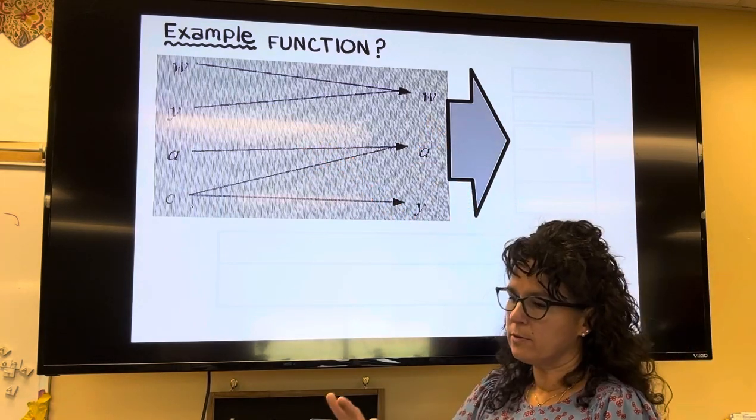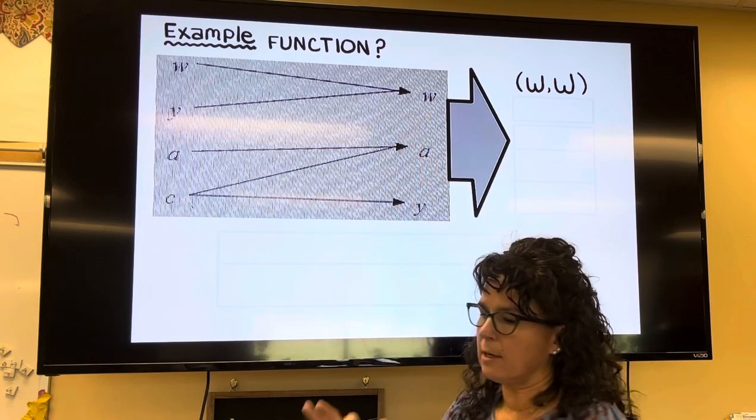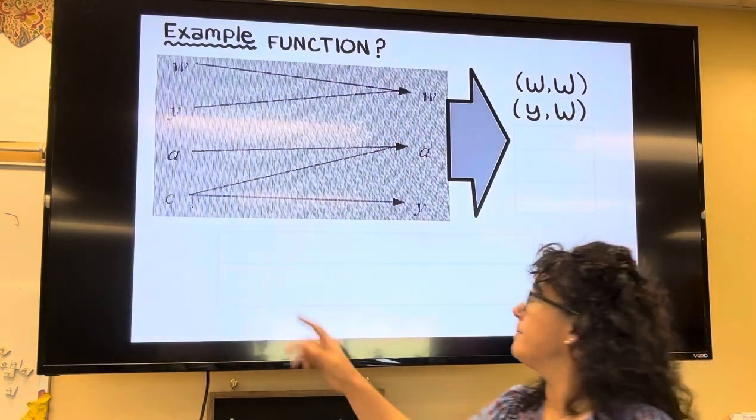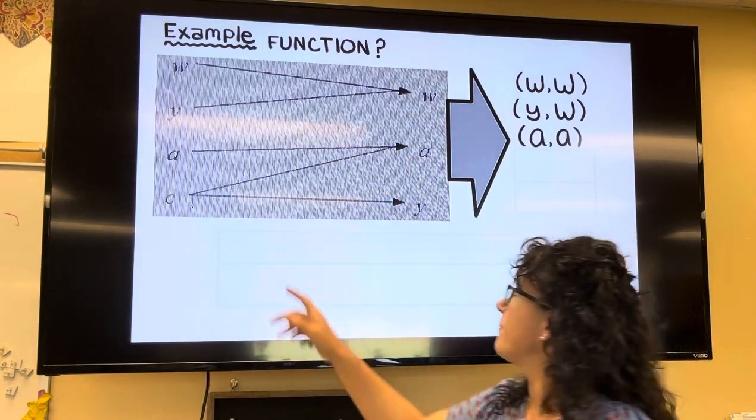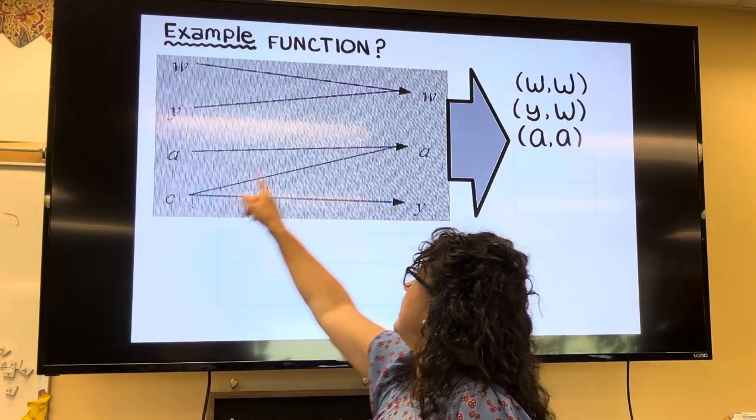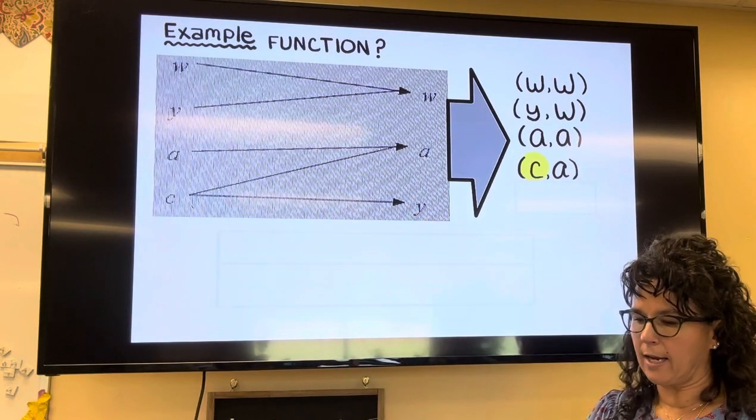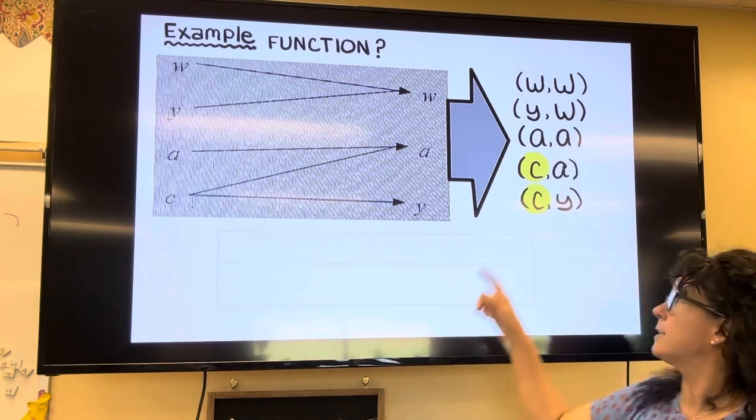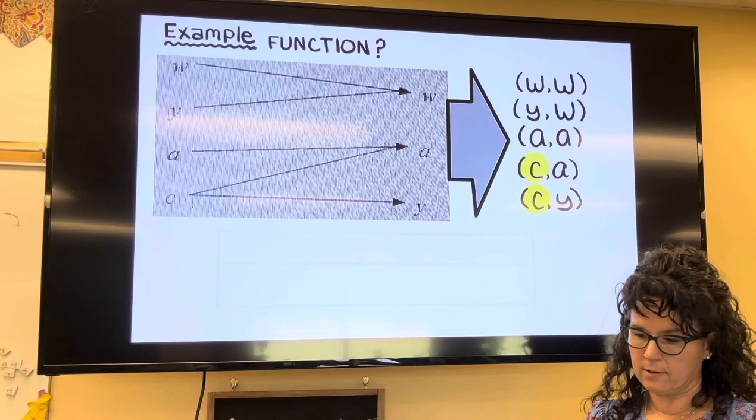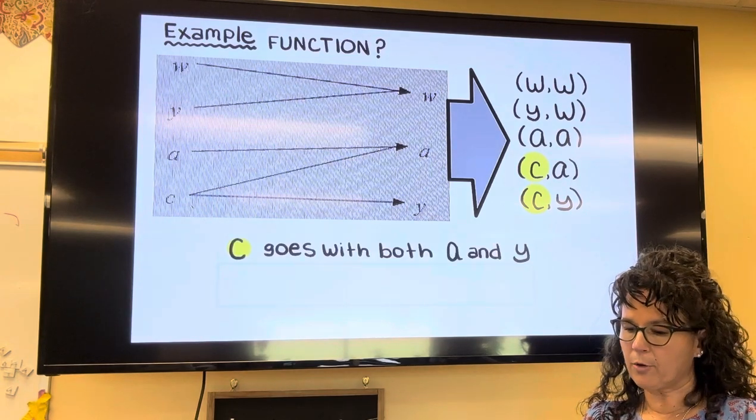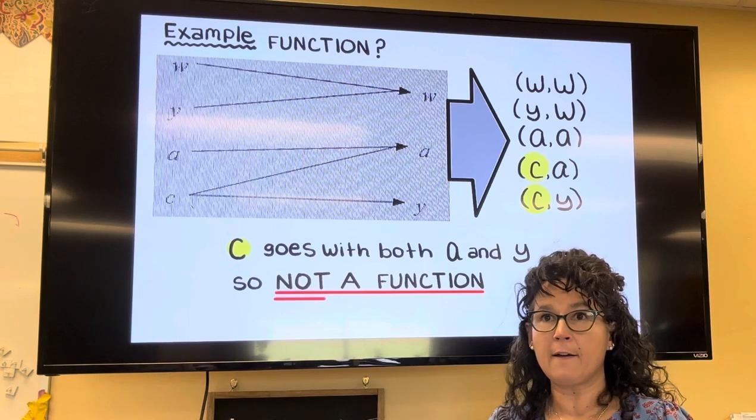Okay, last example here. These ones: w goes to w, so that's the point w w. Y goes to w, so that's the point y w. A goes to a, and c goes to a. Notice that we have a couple of x's there that are the same. So this one, the c goes to a and y, so in other words this one is not a function.